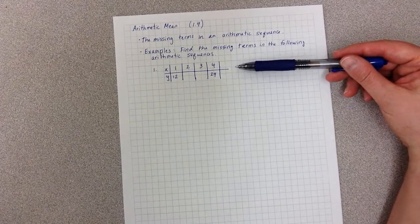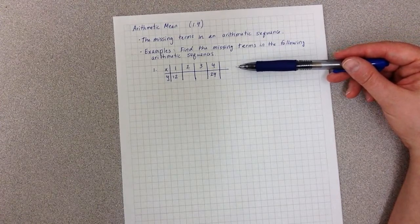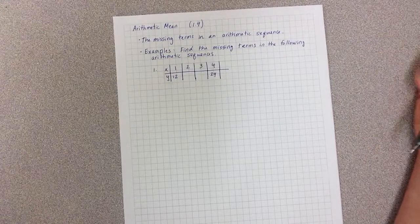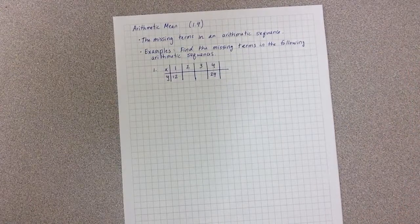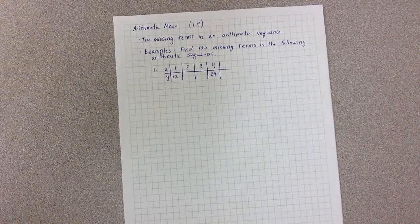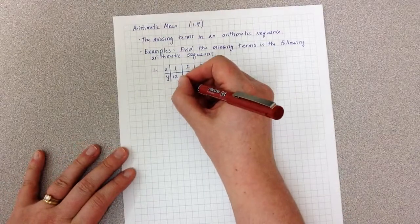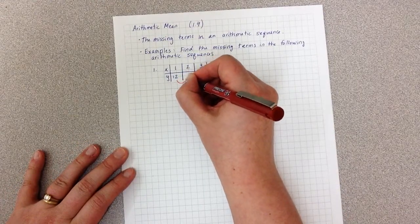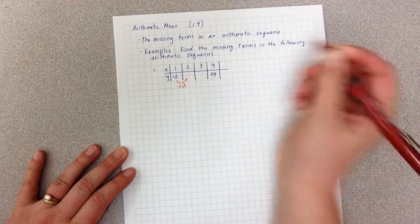In the first one, we're given four terms, but only the first and the last. Remember that arithmetic mean means I'm adding something each time. To go from the first to the second term, I'm adding a number,